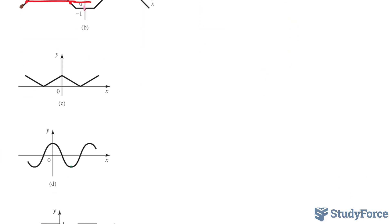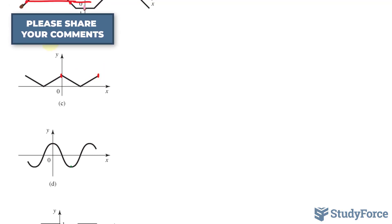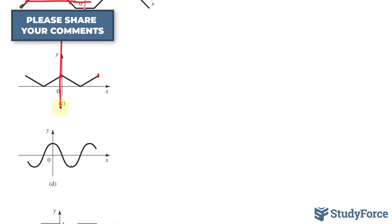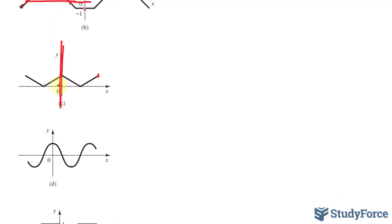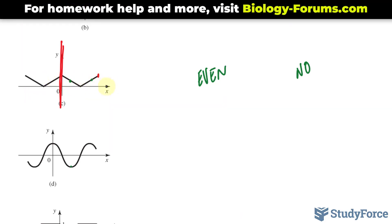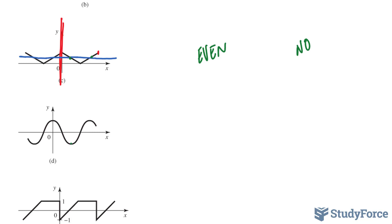For question c, the waveform is clearly even because reflecting it about the y-axis produces an identical result. However, selecting a point and checking half a cycle away gives the same y-coordinate — not the opposite — so this is not a half-wave symmetry. Interestingly, if we moved the x-axis to the middle, the negative half-cycle would be identical to the positive, and only then would it have half-wave symmetry.